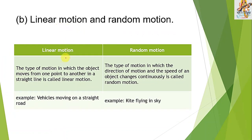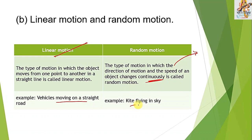Linear motion vs. random motion. Linear motion: the object moves from one point to another in a straight line — example, a vehicle moving on a straight road. Random motion: the type of motion in which the direction and speed of the object change continuously — example, a fish swimming in water or a kite flying in the sky.